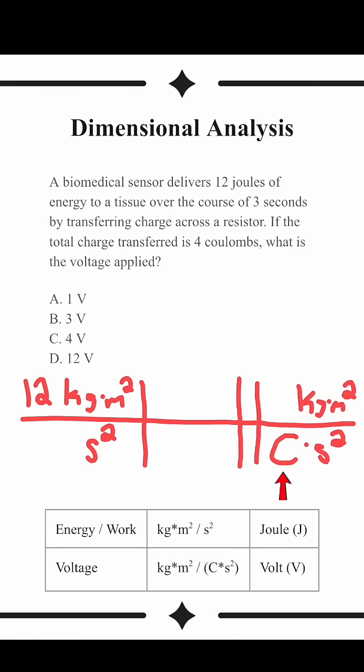Notice the only difference here is the coulombs. Therefore, this table is showing us that joules divided by coulombs makes volts.